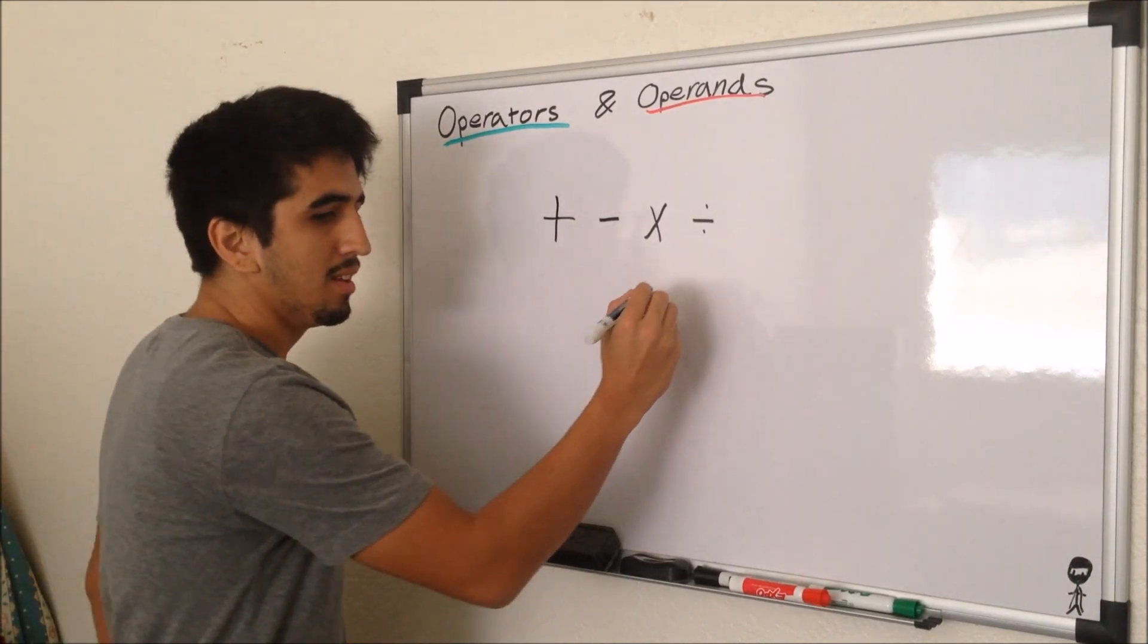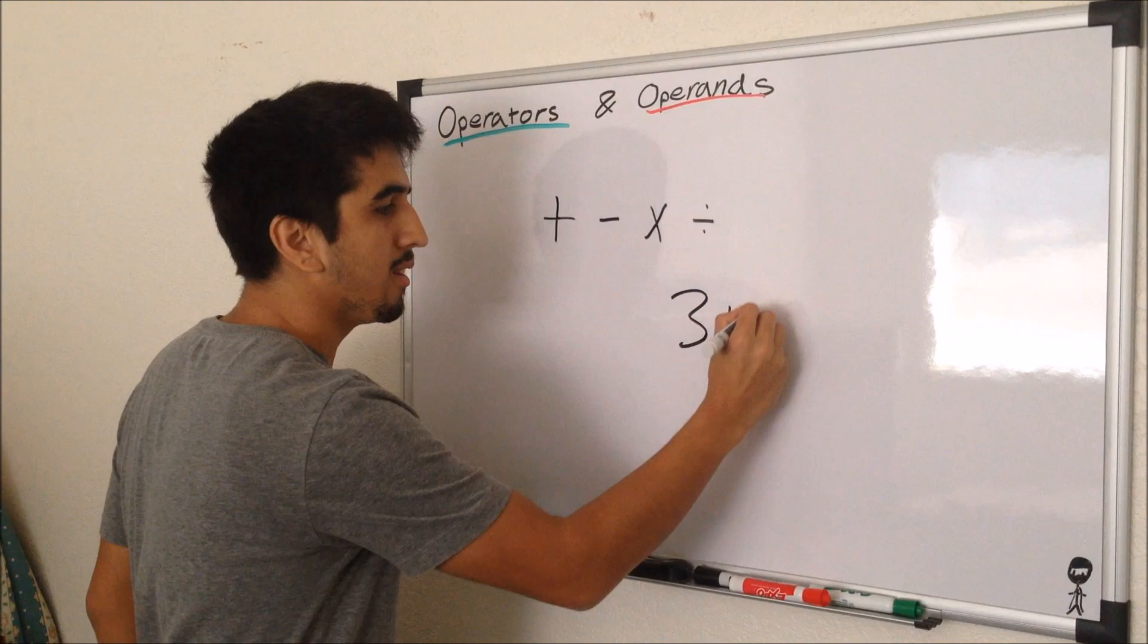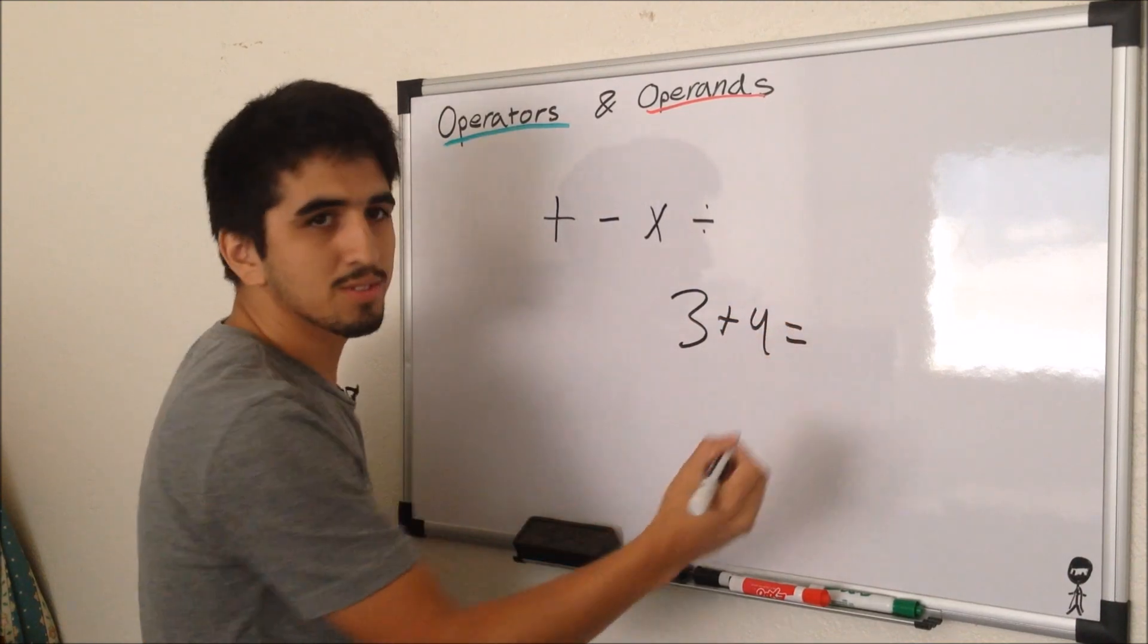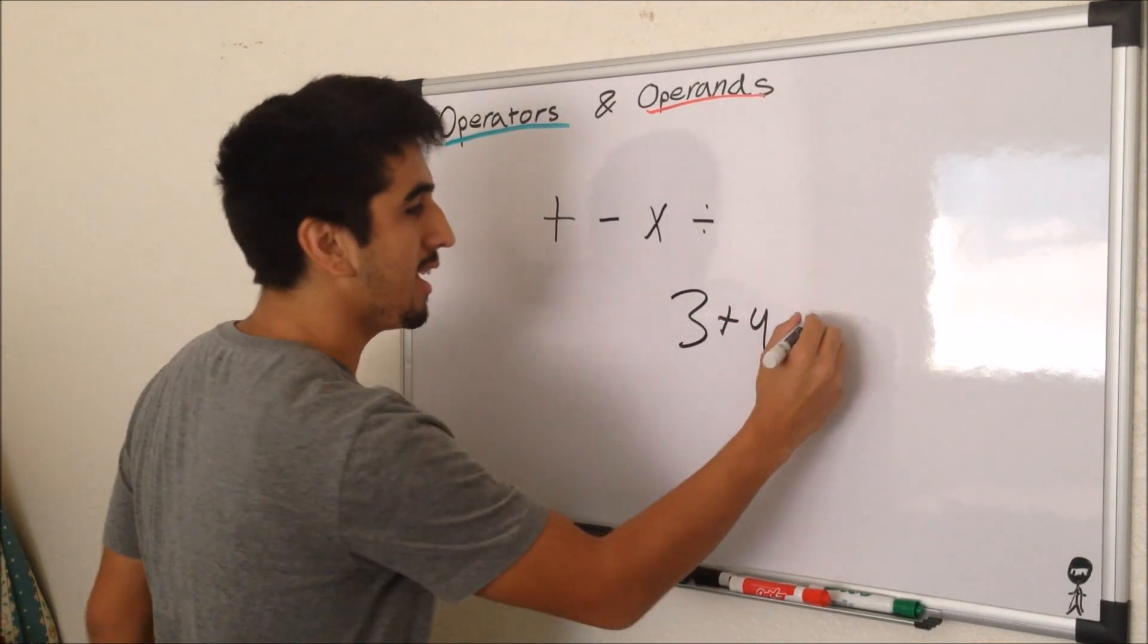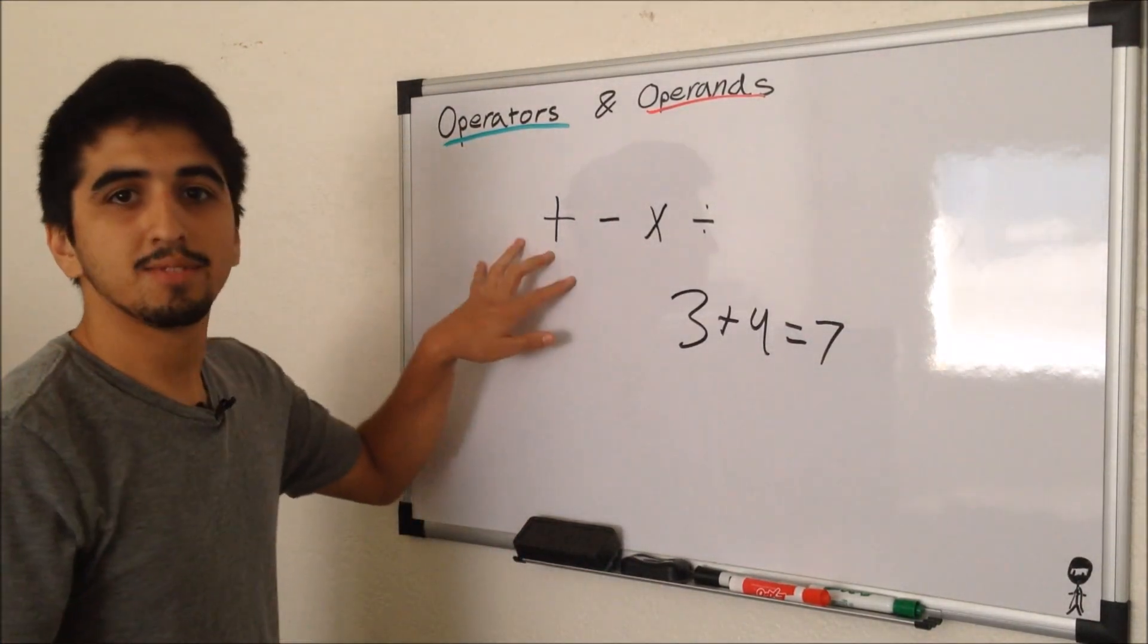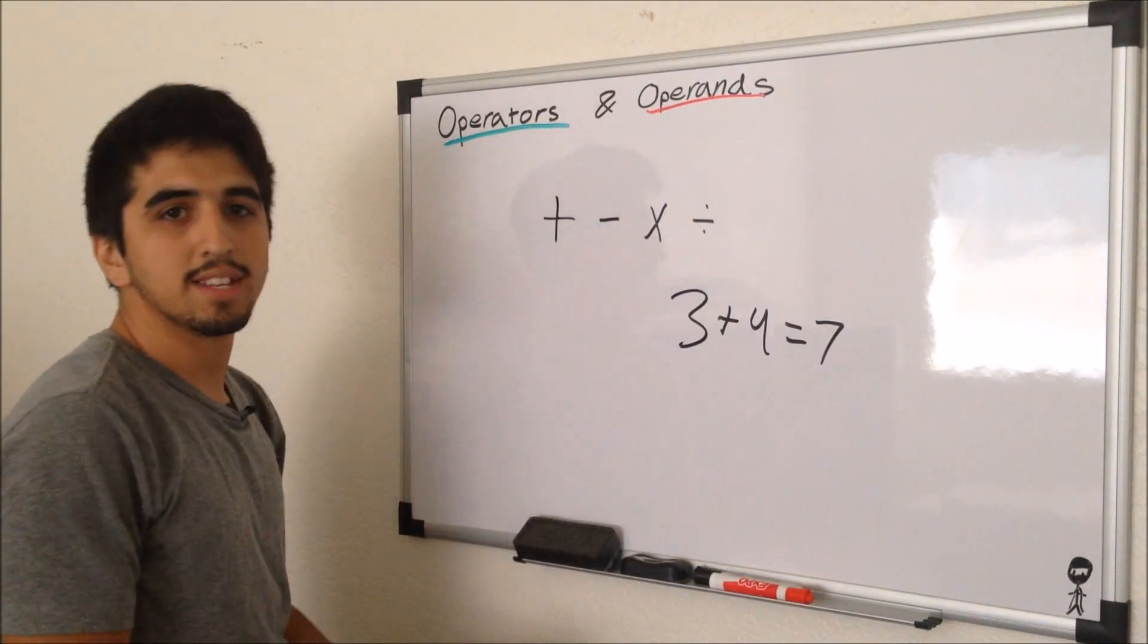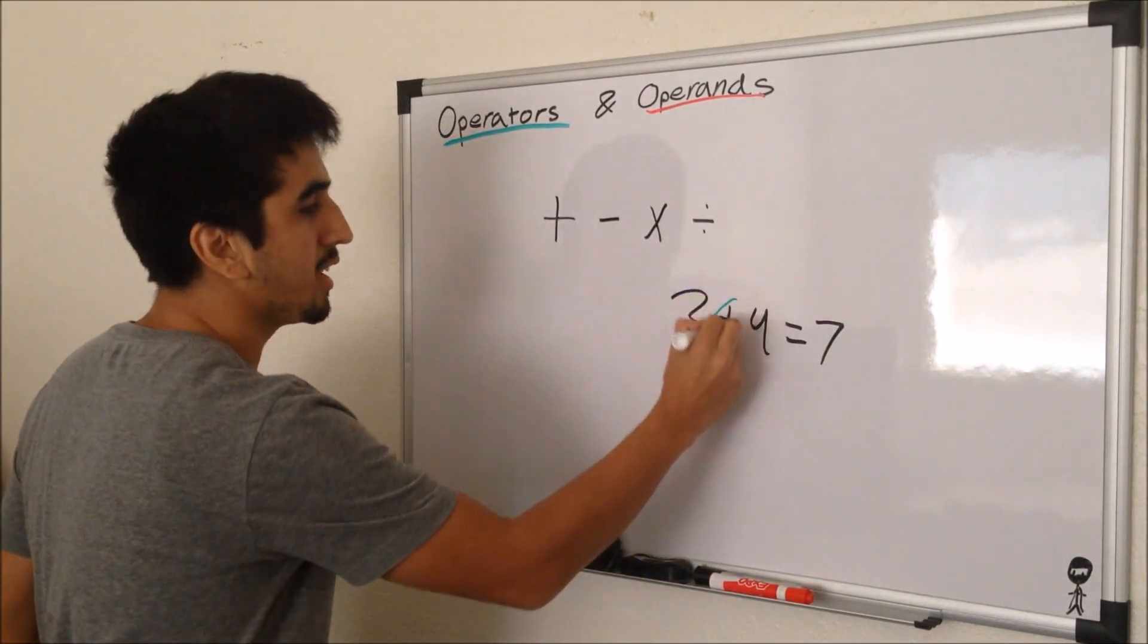Let me put out a little equation: 3 plus 4 equals 7. We all know that. And using what I have told you, we see an addition sign right here. We know that is an operator. Let's just circle that in green.